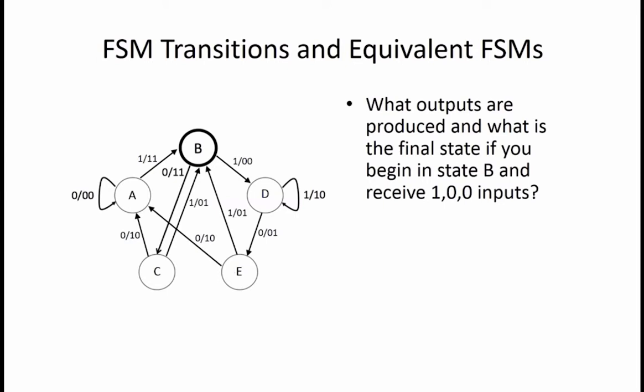Since our state transition diagram is now filled, we see that from state B, a one input takes us to state D and produces a 0, 0 output. From state D, a zero input moves us to state E and outputs 0, 1.